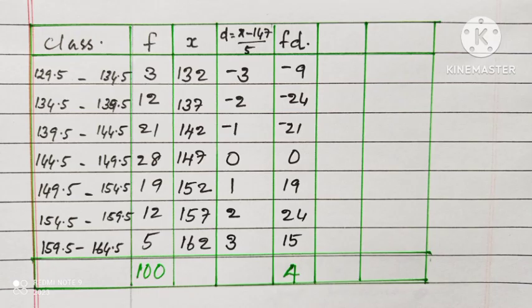For finding mean, we are rearranging the classes. The next column is frequency. Next one is x, that is the mid-value of each class. We are taking 147 as assumed mean. Then we find d equals x minus 147 divided by class interval.